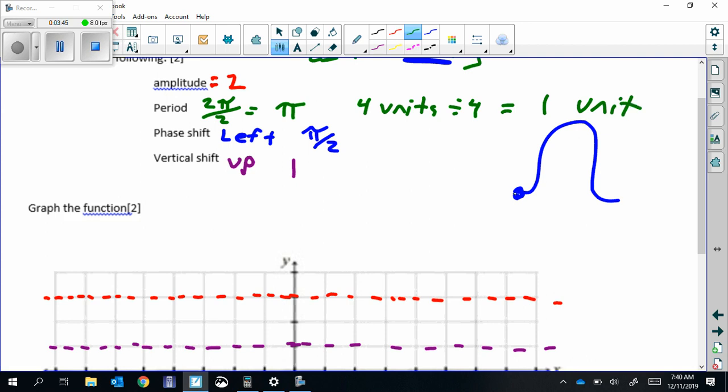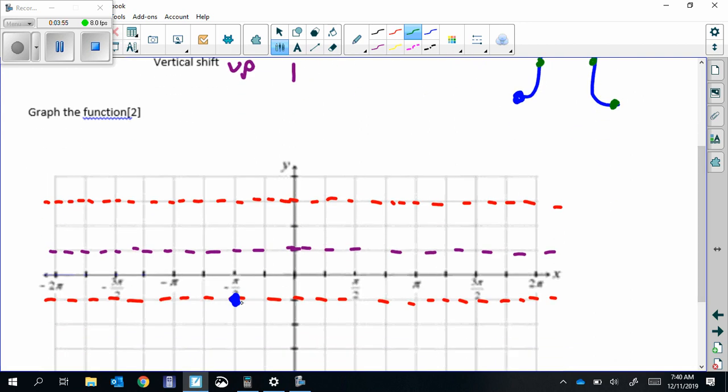All those key points - the bottom, middle, top, middle, bottom - those points are all going to be 1 unit spaced out. So we started from the bottom. We go 1 unit, put our next dot. 1 unit, put our next dot. All the way through the entire graph. Go in both directions.